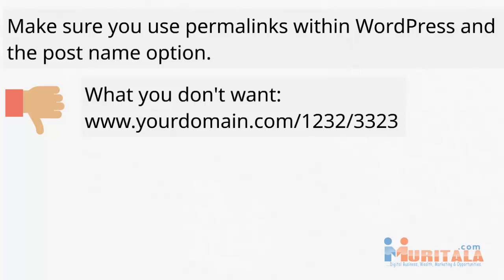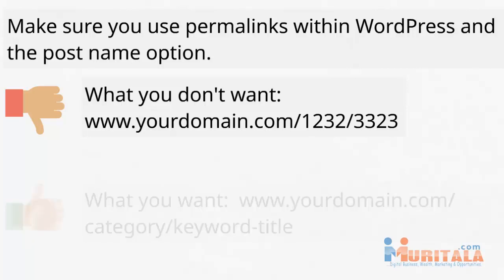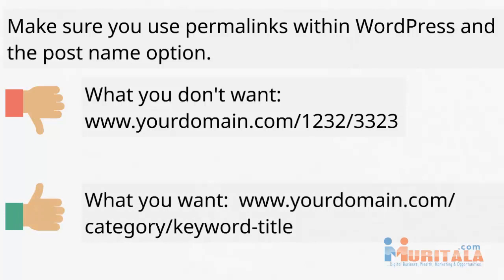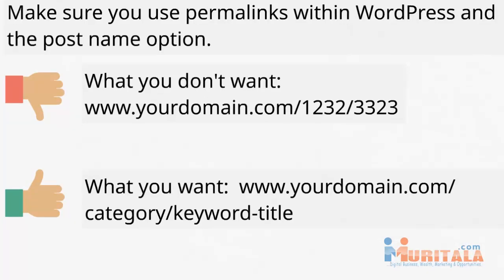You definitely don't want your domain to look like that — and it looks like that by default. So within WordPress, you want to set the post name option. By doing that, it's going to say 'yourdomain.com/category/keyword-title.' I'll show you all of that in the next video, but I want to make sure you understand these basics. Try to stick with a brand name, and then choose the post name option within WordPress.